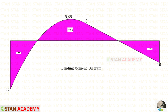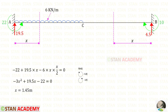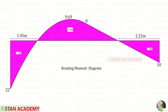The bending moment diagram shows two points where the bending moment becomes zero. Making sections at these two points: for the left-side zero point, a section at distance x from point A using the right hand side rule gives x equal to 1.45 meters, and for the right-side zero point, a section at distance x from point B using the left hand side rule gives x equal to 2.22 meters.